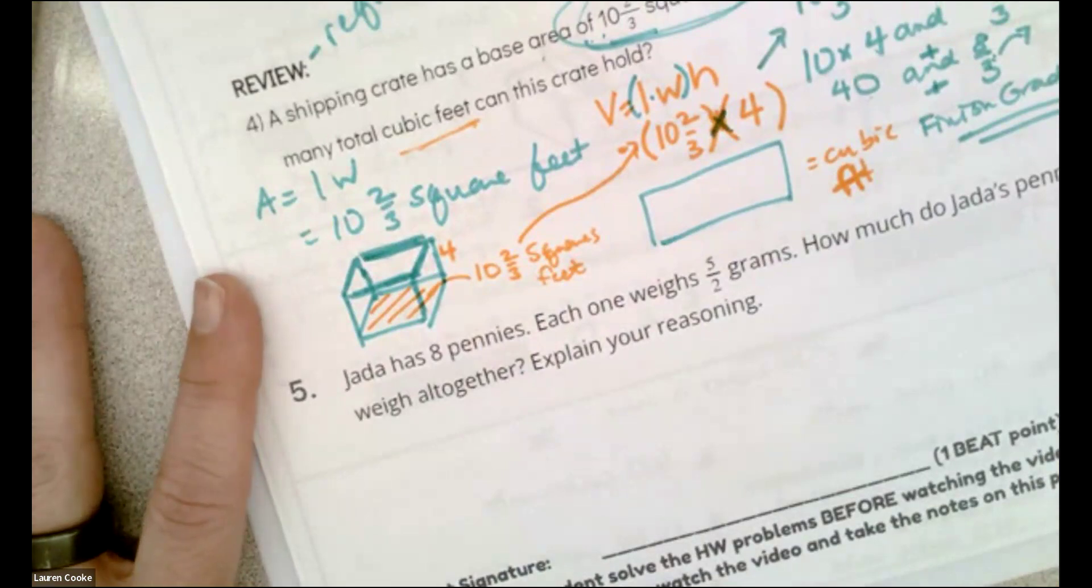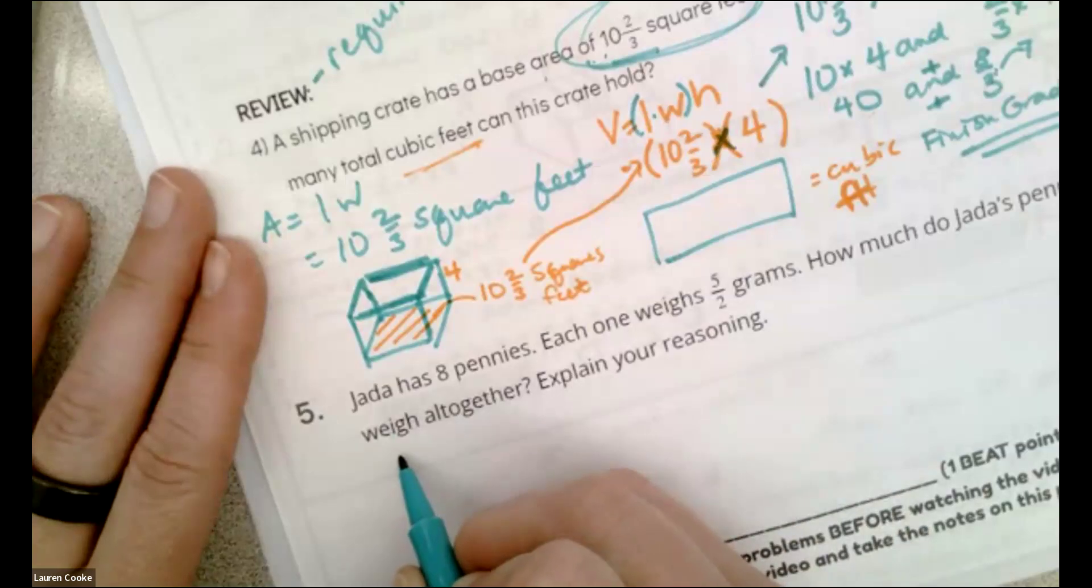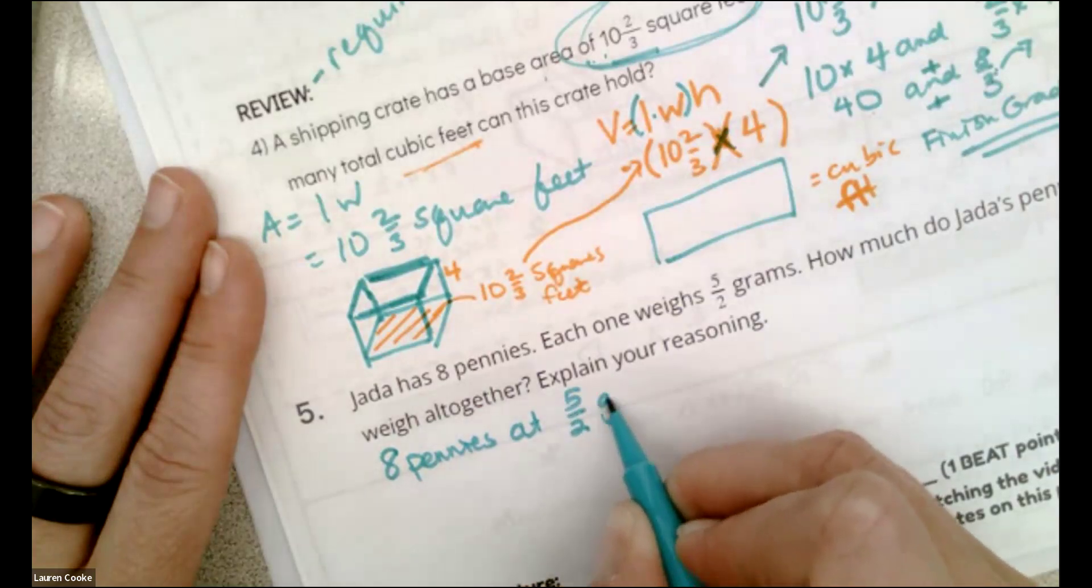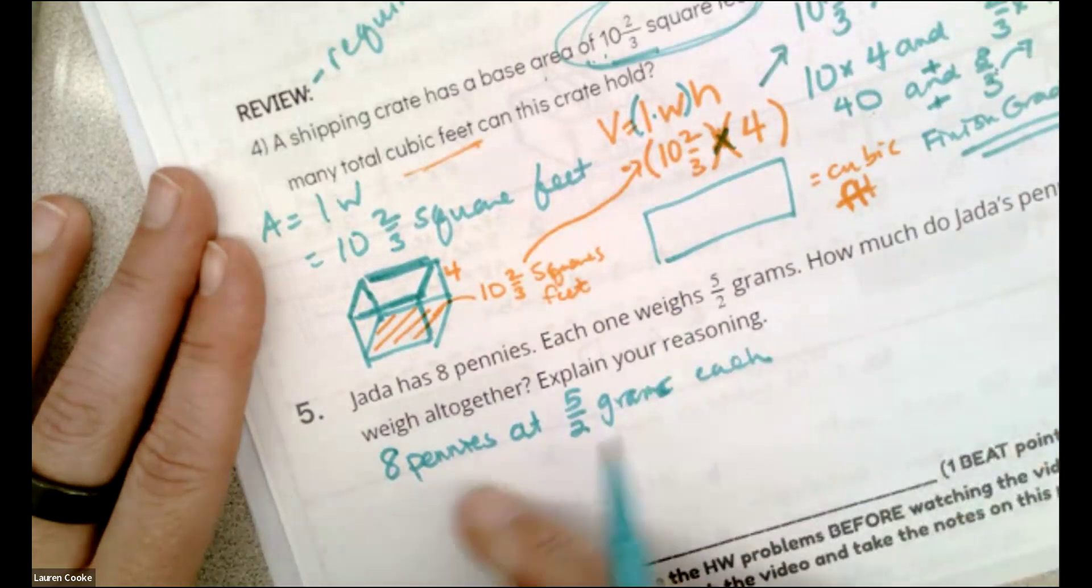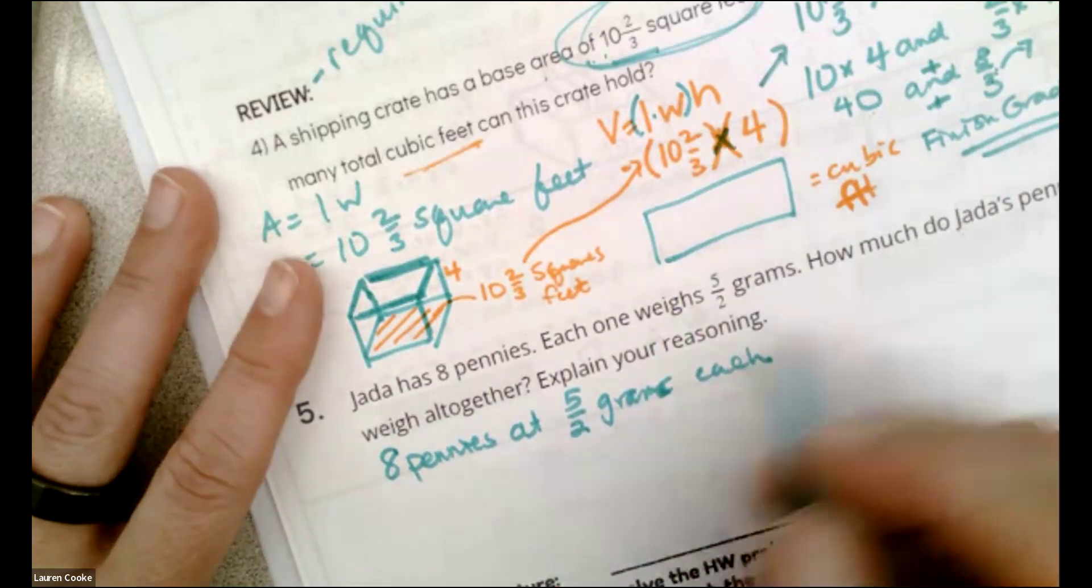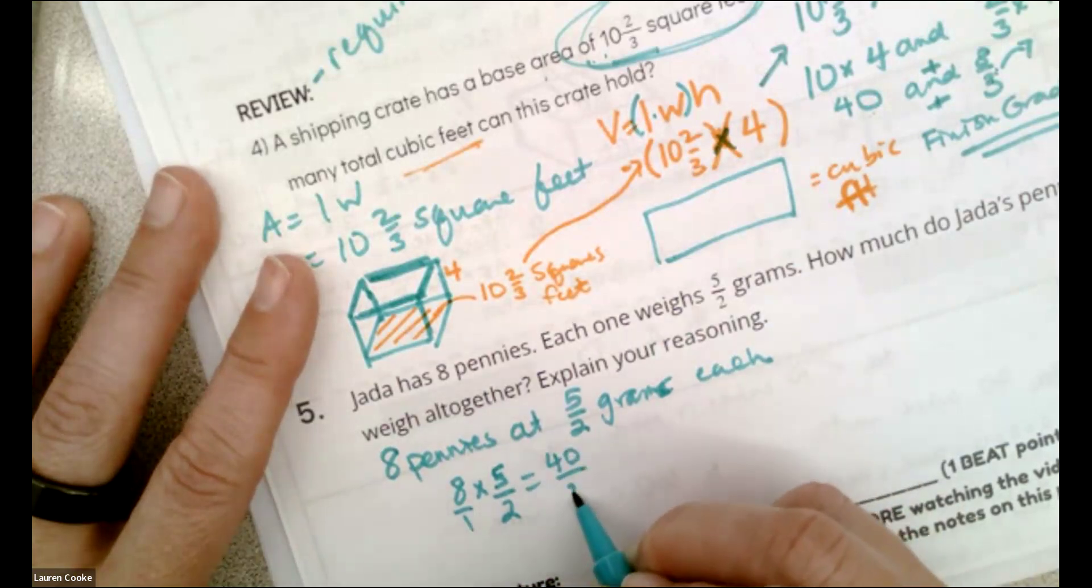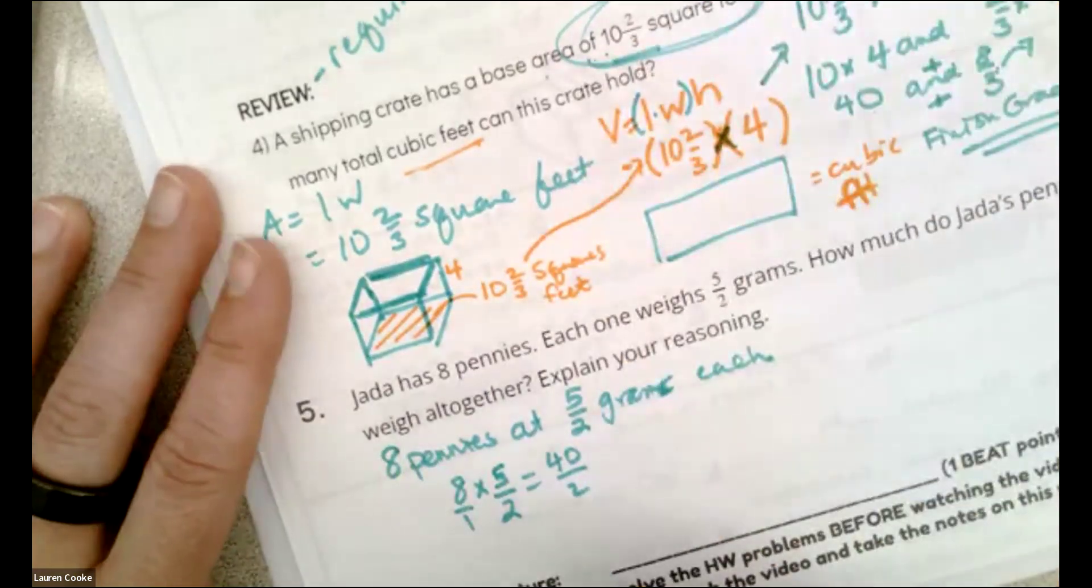Now for number five, we did a similar one. I left you to do it on your own Monday, so today I'm going to work on it. So Jada has eight pennies at five over two grams each. So I can add five over two eight times, or I can multiply.